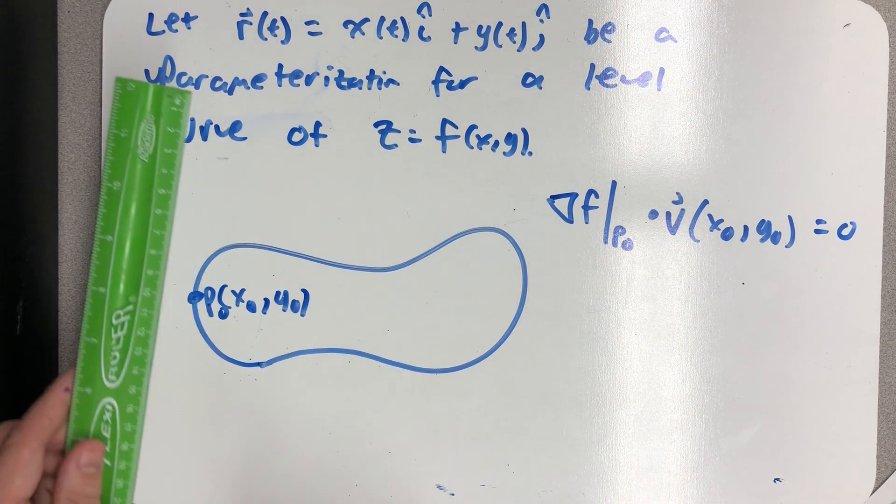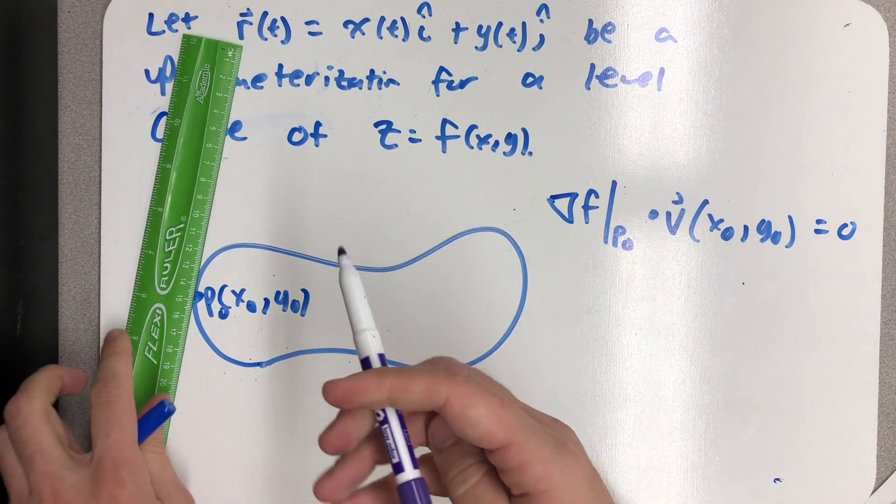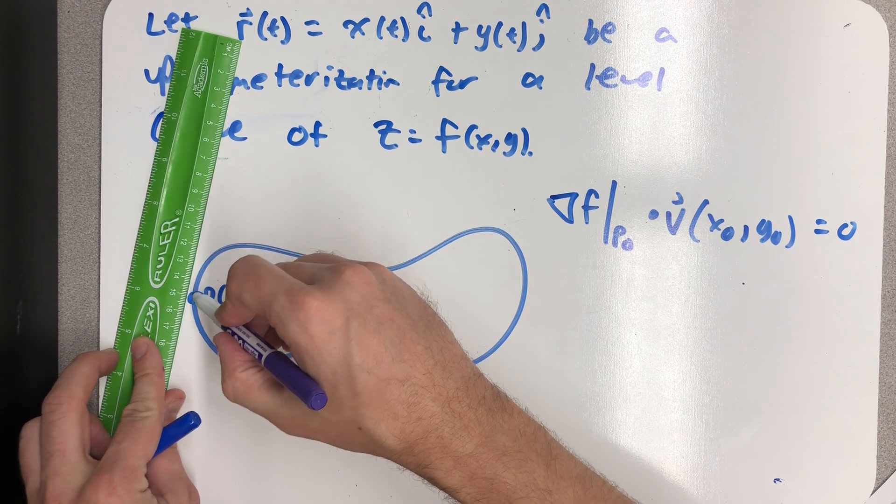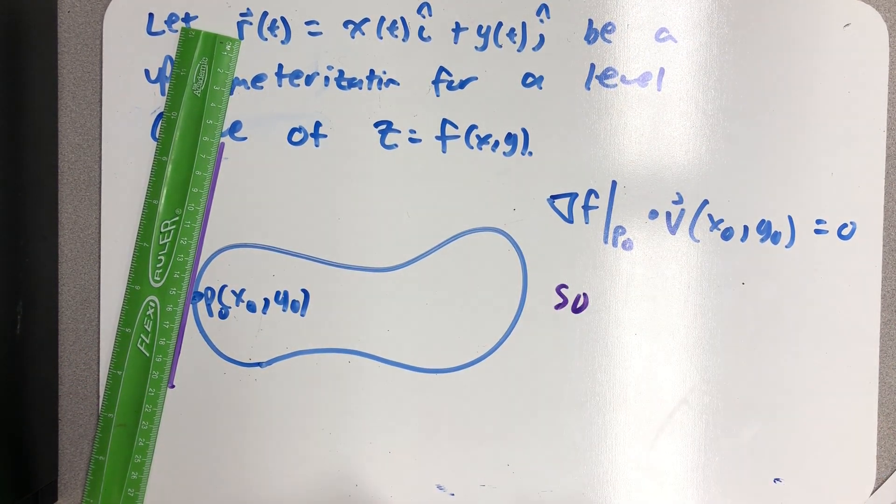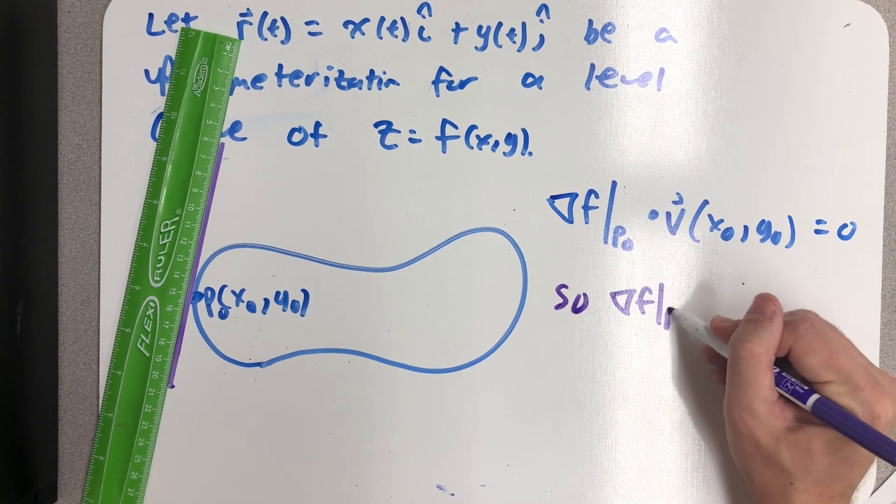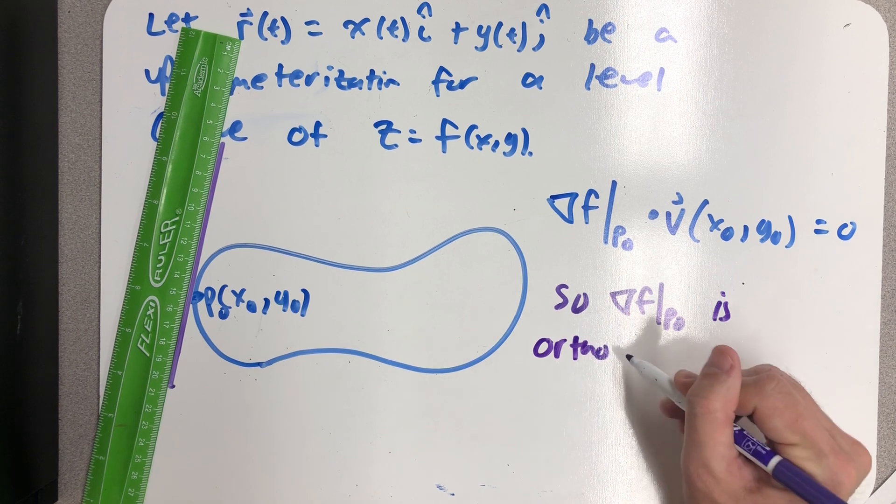I want to use that idea to be able to figure out what the equation of this tangent line would be. So, I'm going to use this idea that del f, evaluated at that point, is orthogonal to the direction of motion.